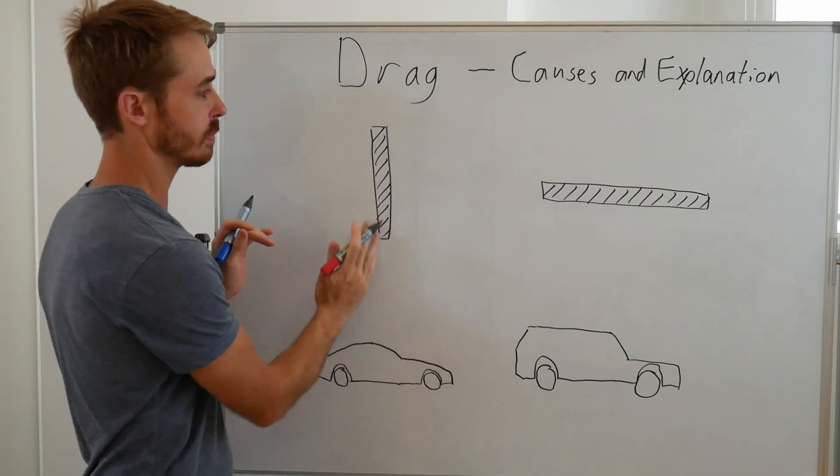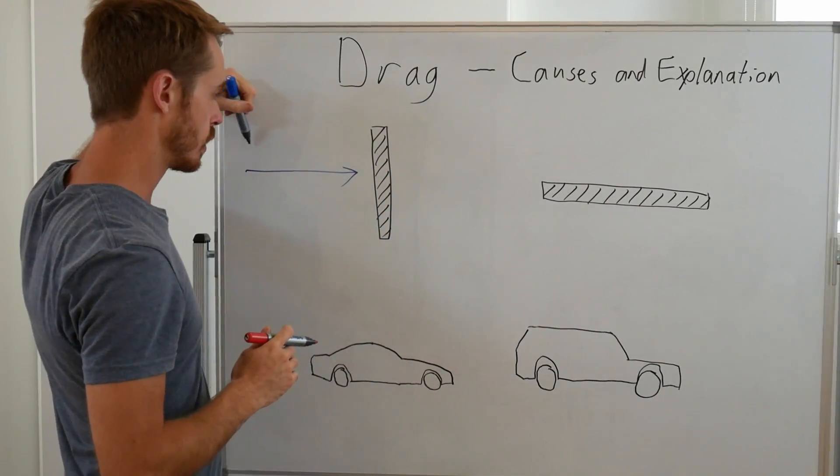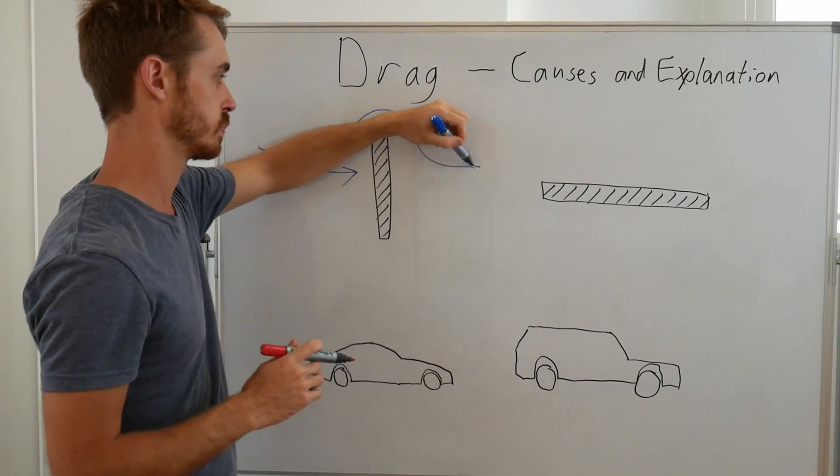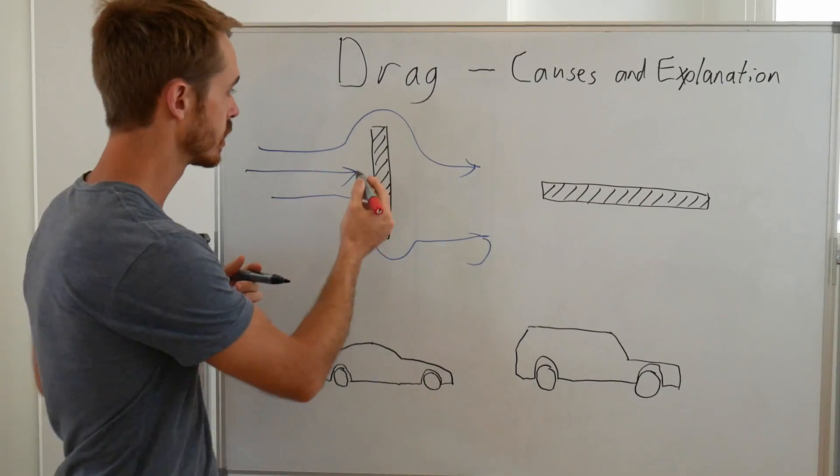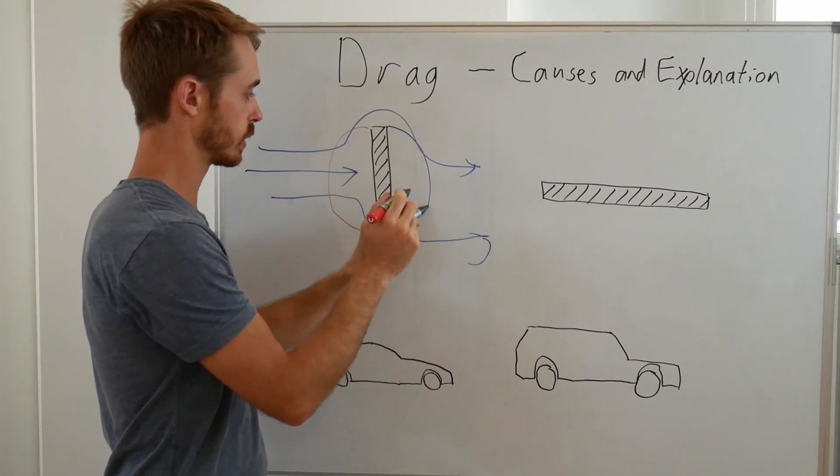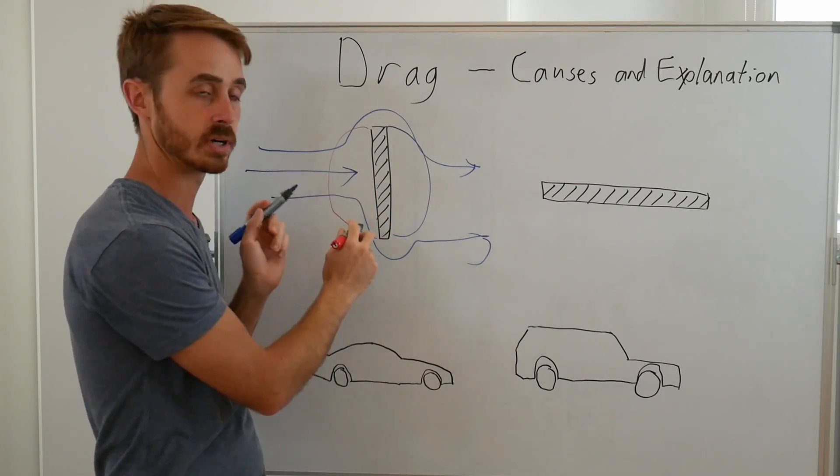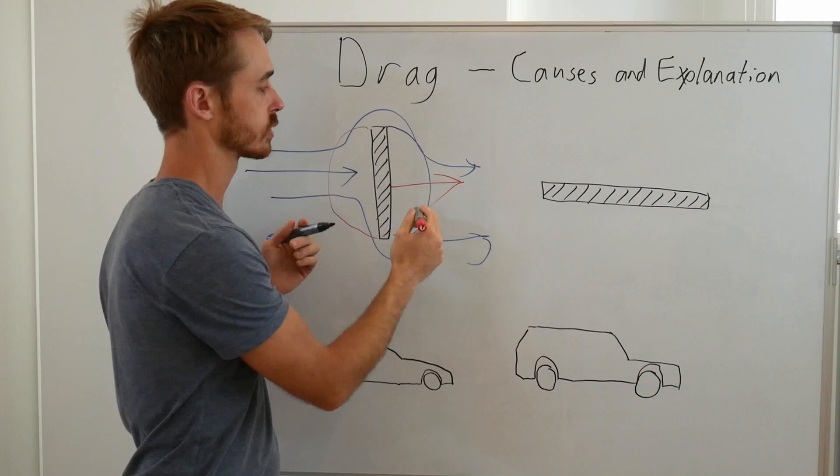So pressure drag is basically if you can imagine a plate flat and the flow is coming in this way, we end up with our flow being deflected around it and we'll end up with different flow accelerations at different points that cause the pressure to be high on here and to be low on here. Now high pressure on this side, low pressure on that side, you end up with a net force that way.